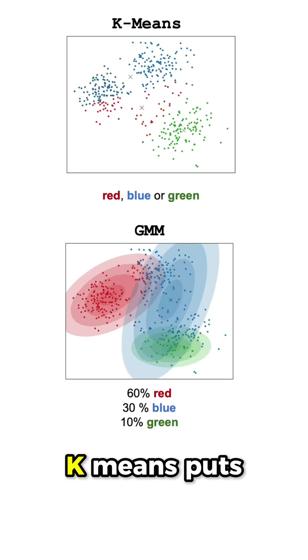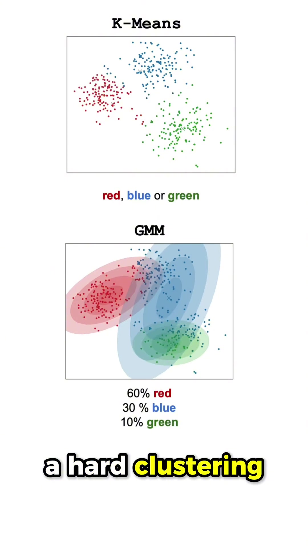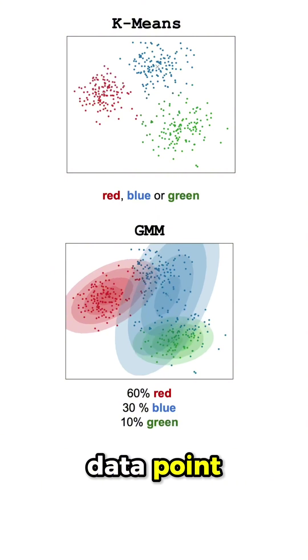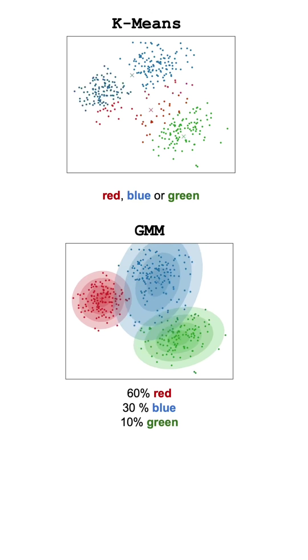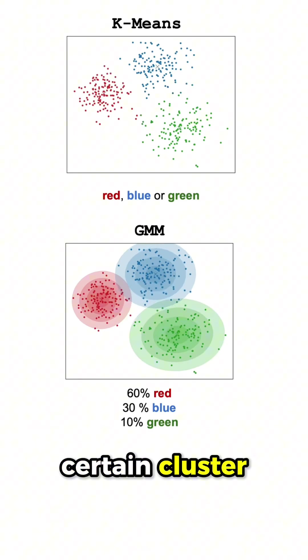So, in simple terms, K-means puts a hard clustering label on each data point, whereas GMMs assigns a softer clustering label, telling us how probably it's for a data point to belong to a certain cluster.